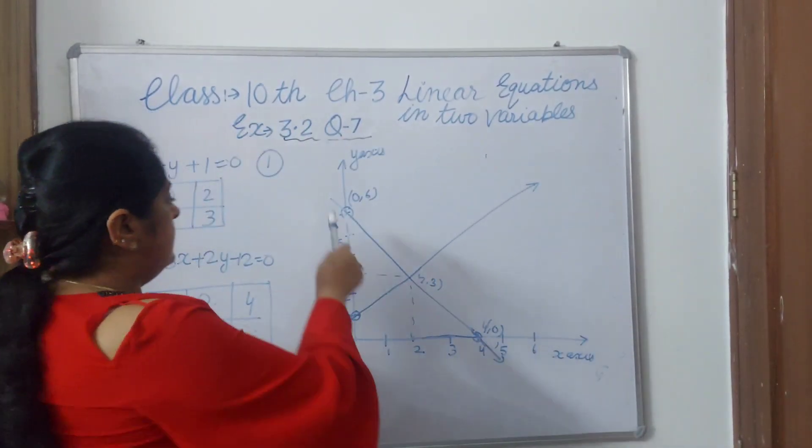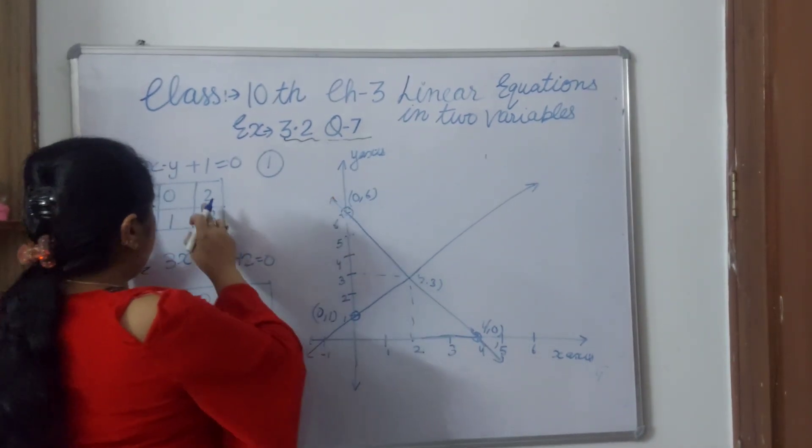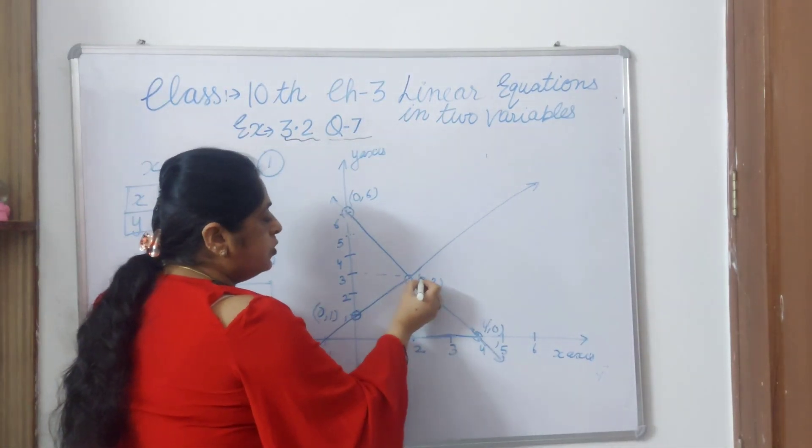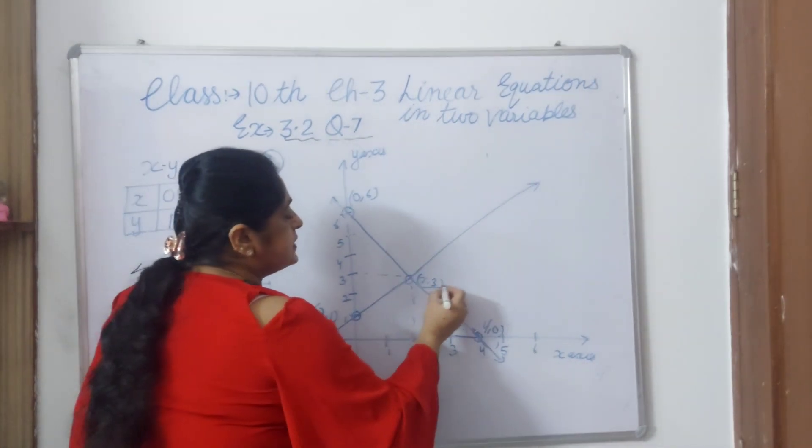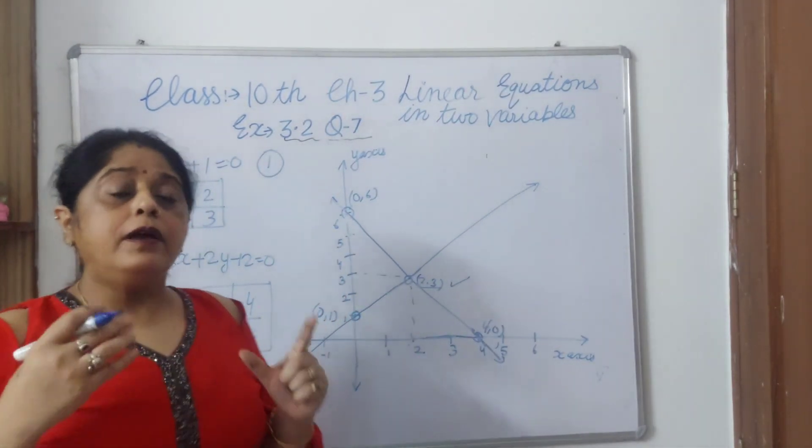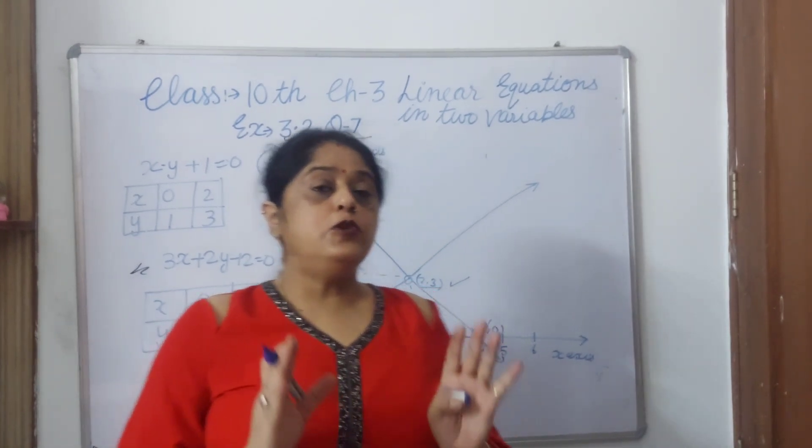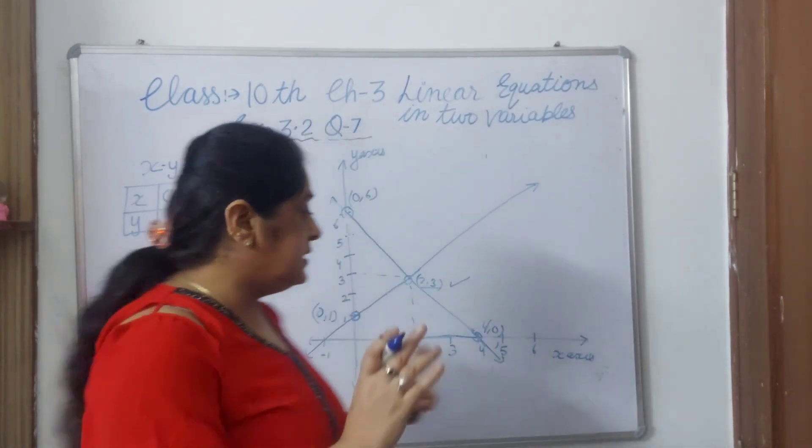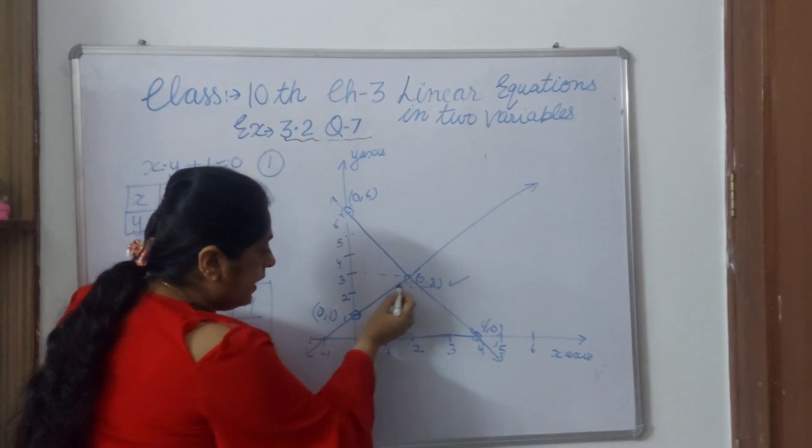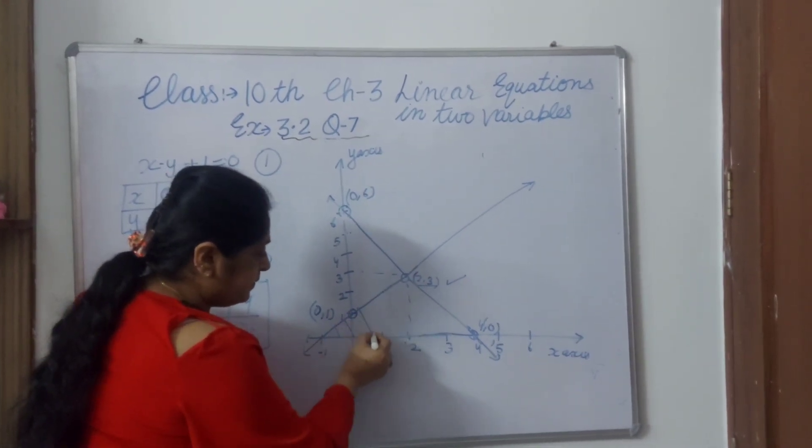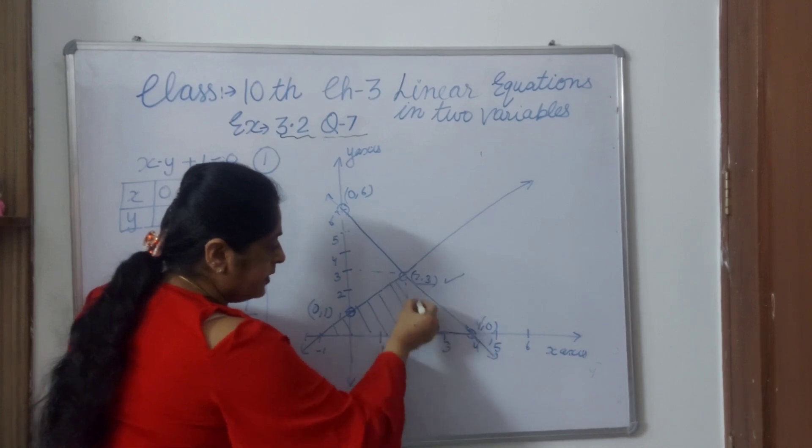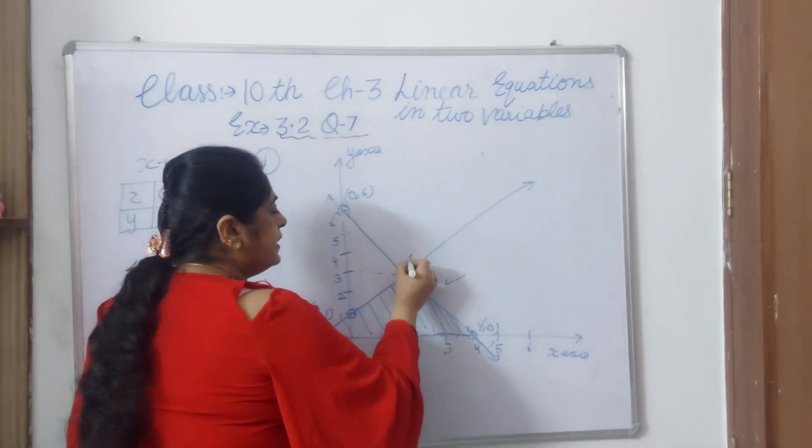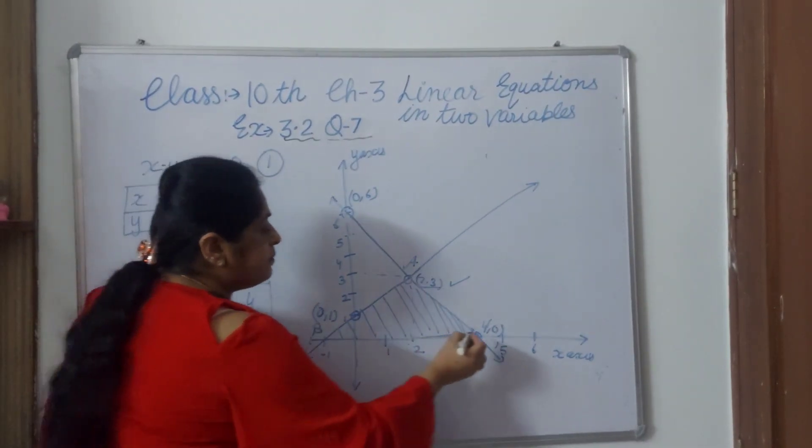Now we have joined these two equations' values of x and y, and both these equations meet at a point here where x is 2 and y is 3. This is the solution of the equations. But according to the statement, they were saying you have to tell the vertices of the triangle formed by these two lines and the x-axis. See, these two lines and the x-axis form this triangle. If you want to write the name, it is A, it is B, and it is C.